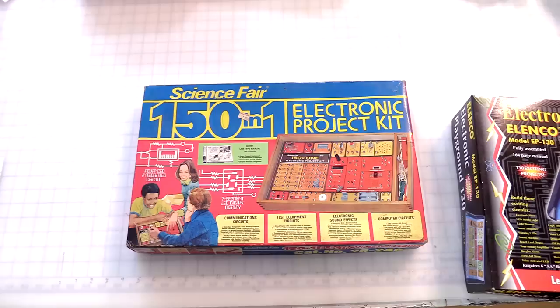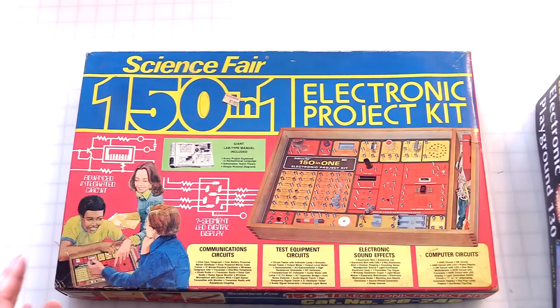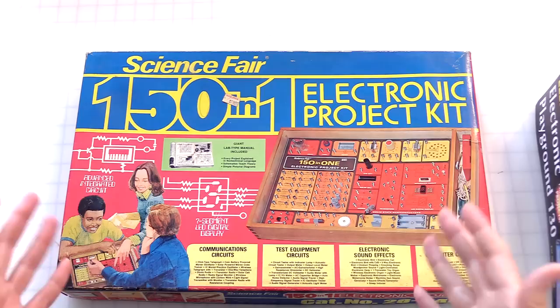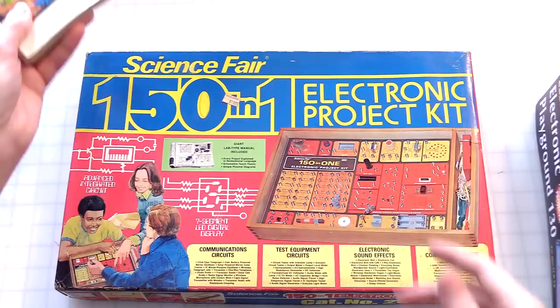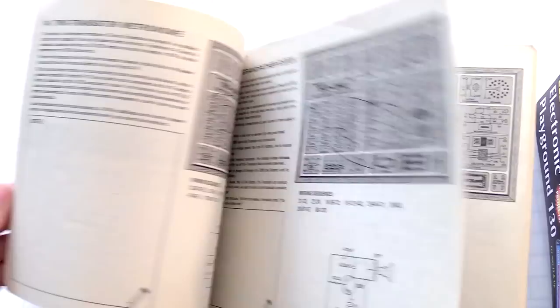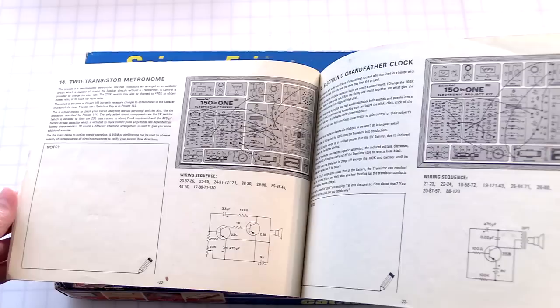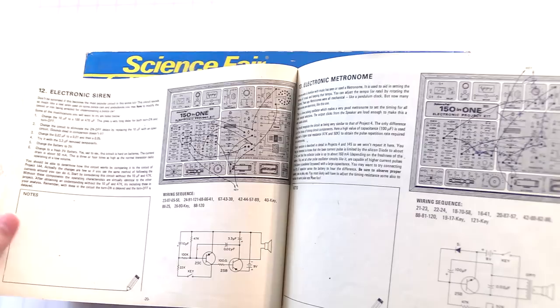Okay, so here's the 150-in-1 kit, and like I said, this is not even my original one. This is one I got off of eBay like around 10 years ago just because I wanted to have one. I still have my original book. I kept the book, so I got the original project book, and I've actually gone through this many times looking for cool circuits and stuff. The oscillators were always the coolest in my opinion.